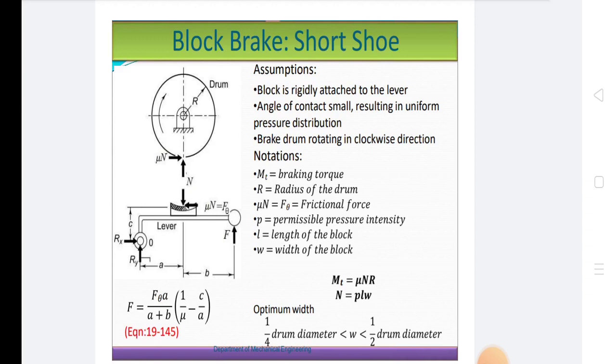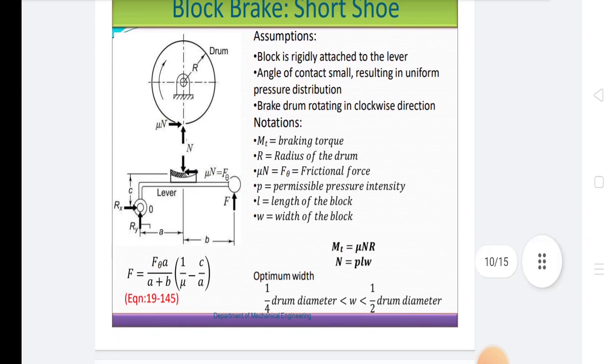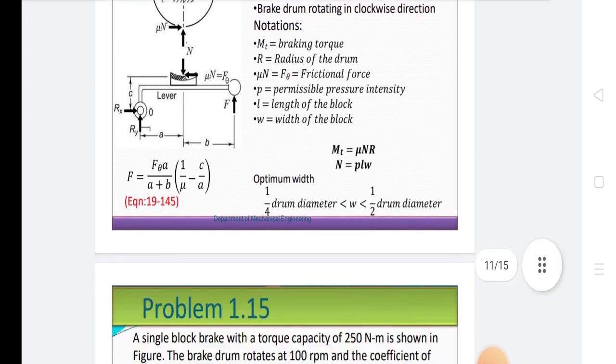Mu N is equal to frictional force. Permissible pressure intensity. L is equal to length of the block. W is equal to width of the block. This is optimum width: 1/4 drum diameter less than W less than 1/2 drum diameter. There is some problem. We will discuss about this problem in next lecture.